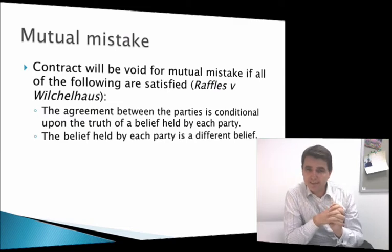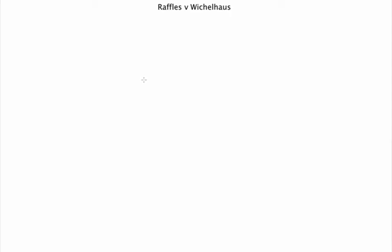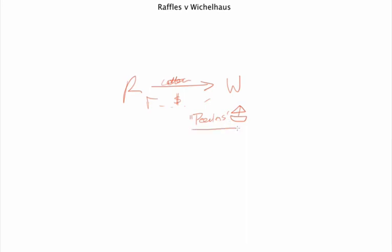Now, that sounds a bit confusing, but a case can help us out. In the case of Raffles and Wichelhaus, Raffles agrees to sell some cotton to Wichelhaus — or to put it another way, Wichelhaus agrees to buy some cotton from Raffles. The cotton would lead to money going the other way, and it was to be delivered by a ship called the Peerless. The problem here was that there are actually two ships by the name of Peerless coming from Bombay.